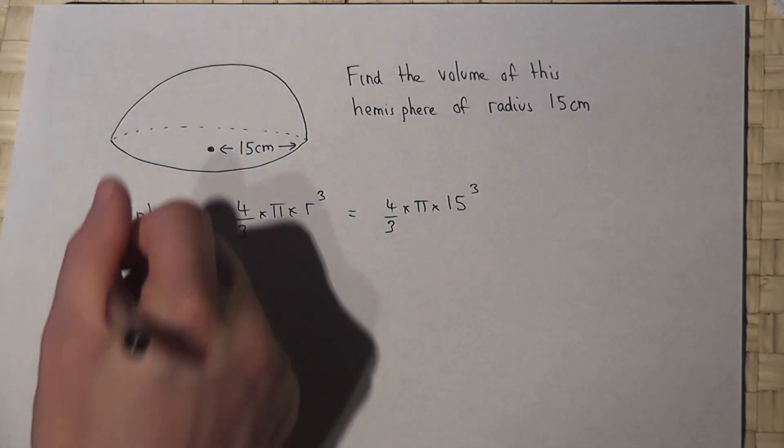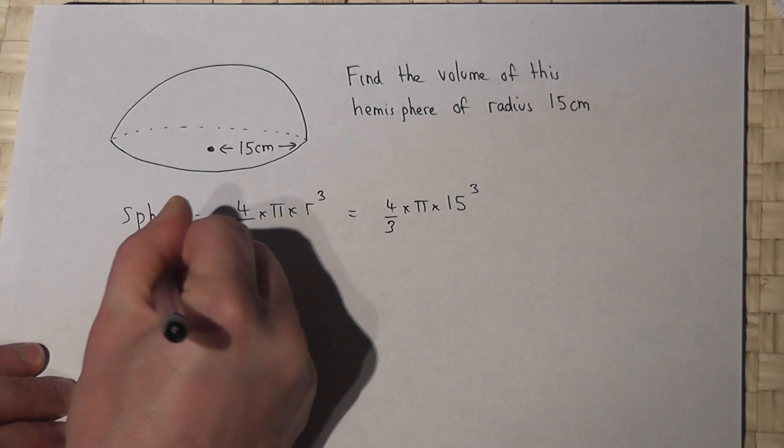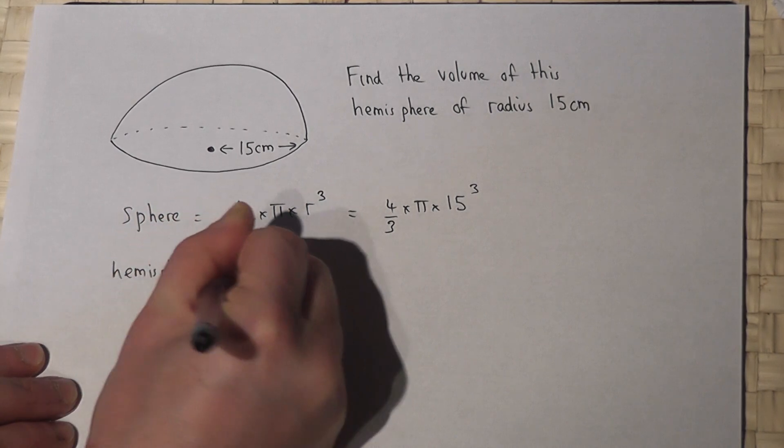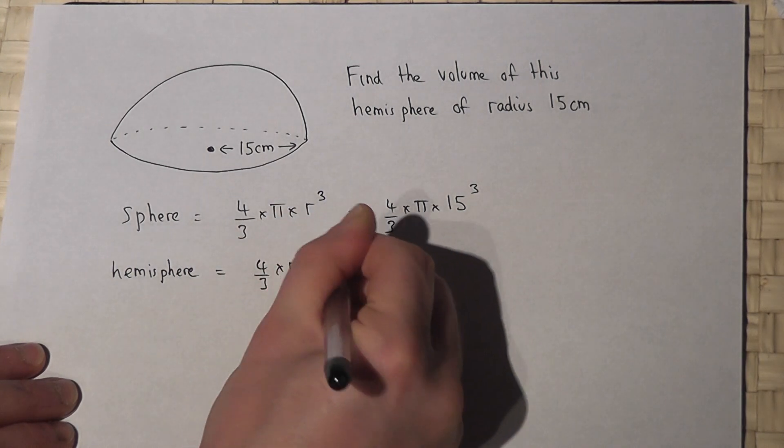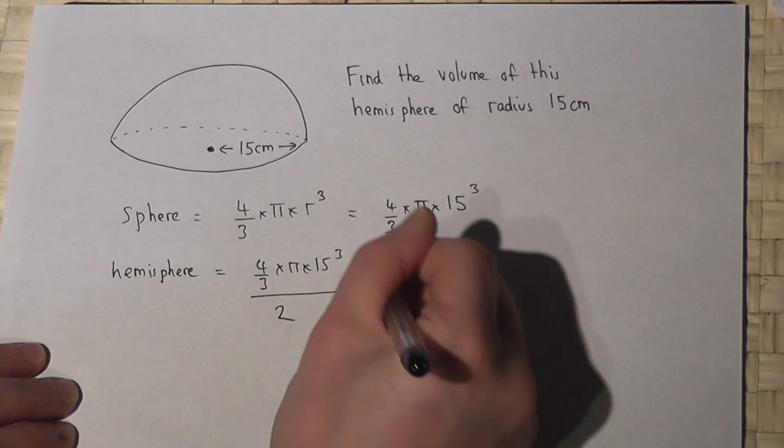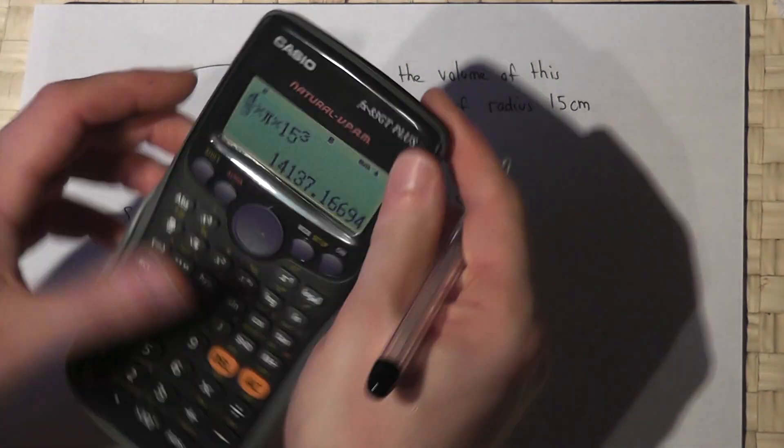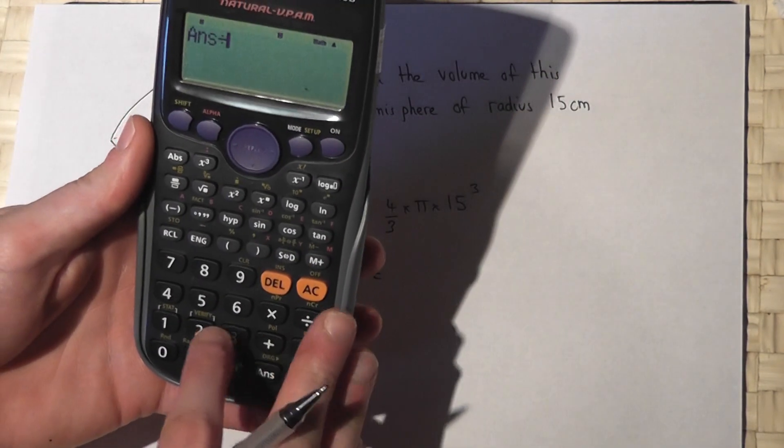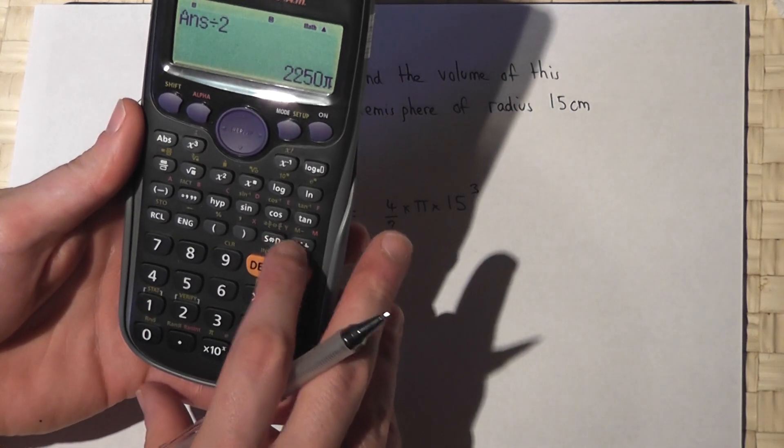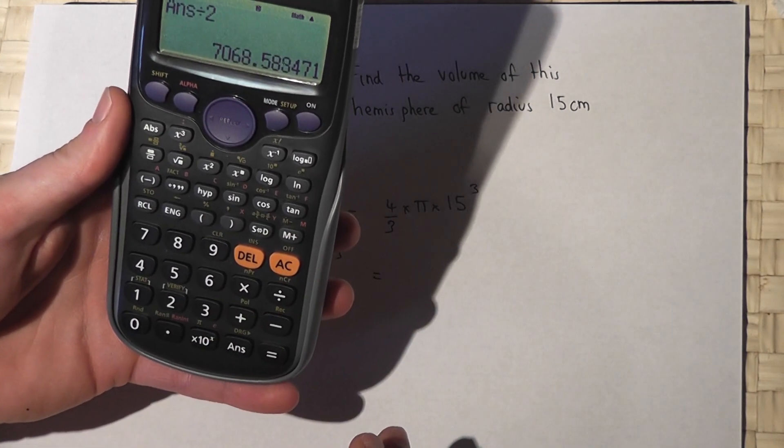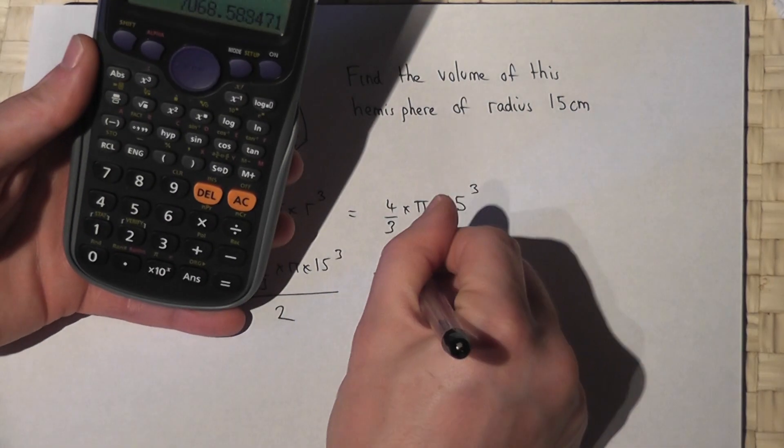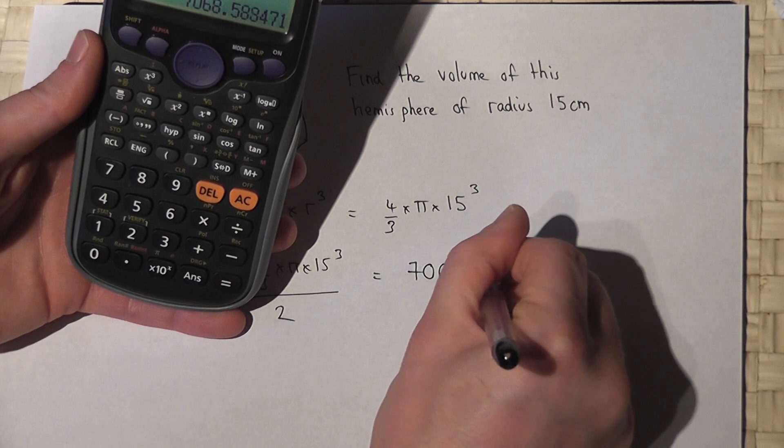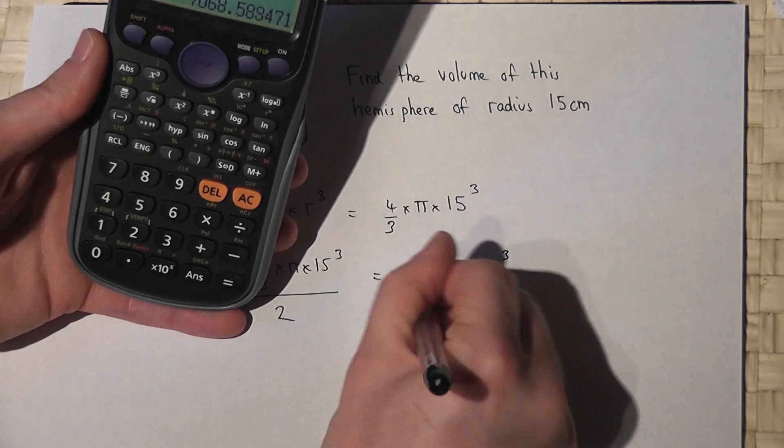So for the hemisphere I just halve this answer. Four divided by two. So here's my answer from before. I press... 7068.583. So we'll round that to 7069 centimeters cubed.